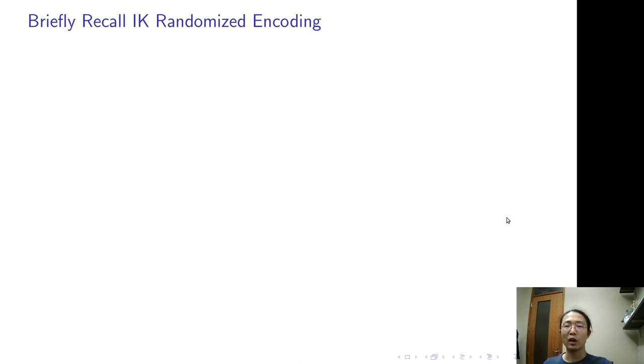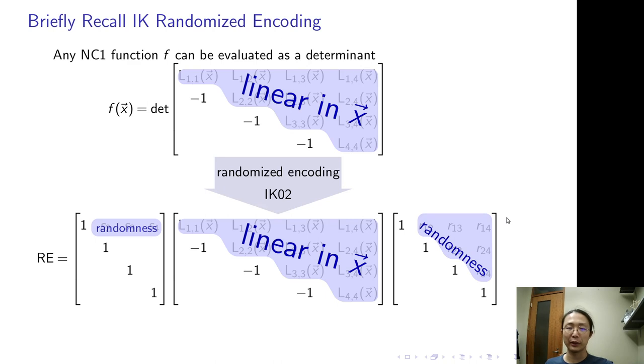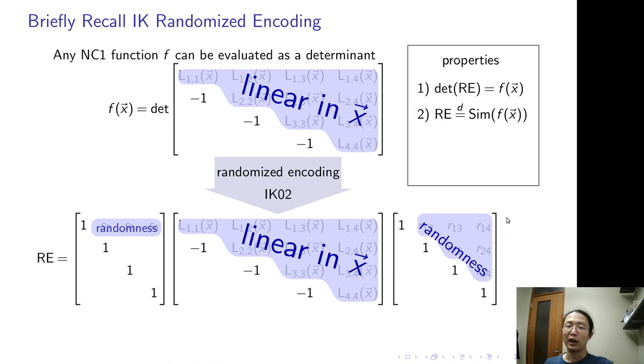IK randomizing encoding works as the following. Any NC1 function can be evaluated as the determinant of a matrix in this canonical form. For example, XYZ plus S equals the determinant of this dimension 3 matrix. This is due to the connection between NC1 and the branching program. In IK randomizing encoding, they multiply this matrix by random matrix on the left and the random matrix on the right. The resulting matrix is the encoding. It is correct because the random matrix they multiply has determinant 1, so the determinant is preserved.